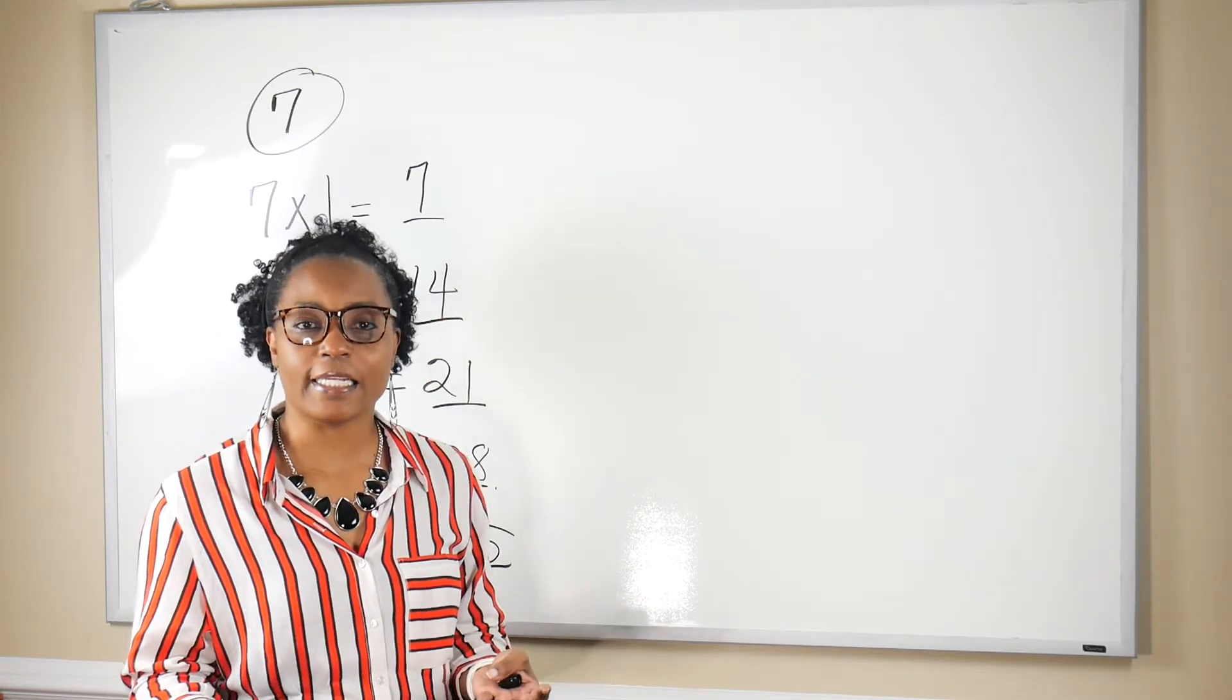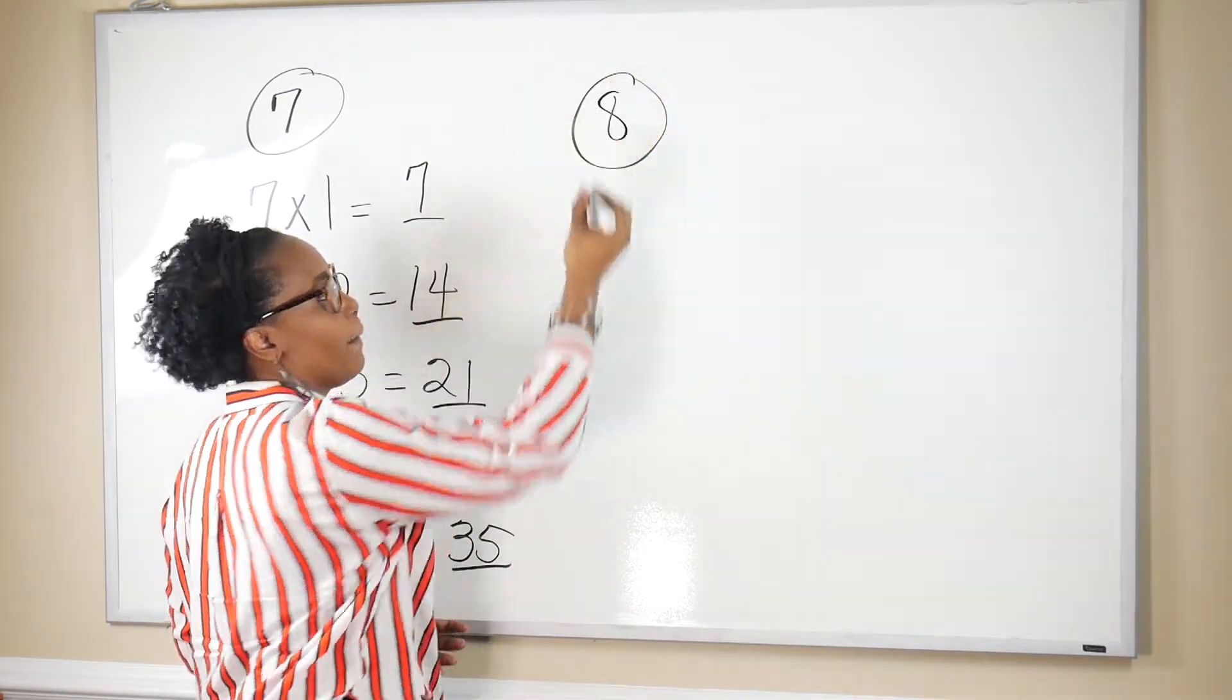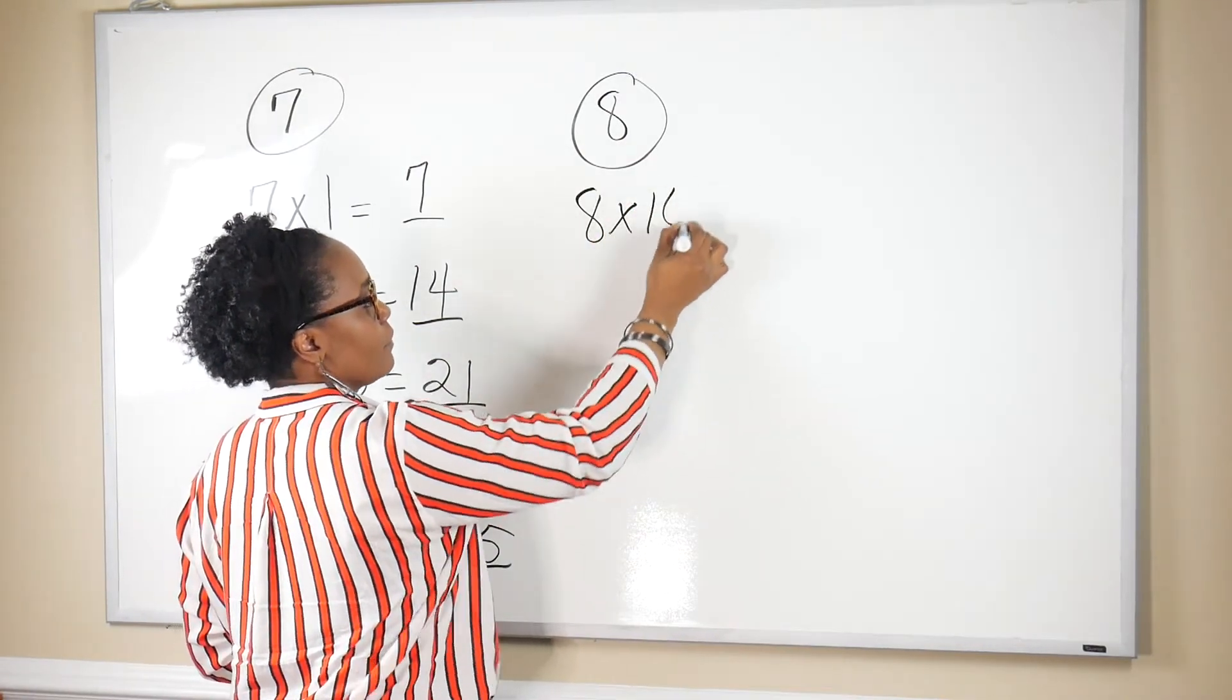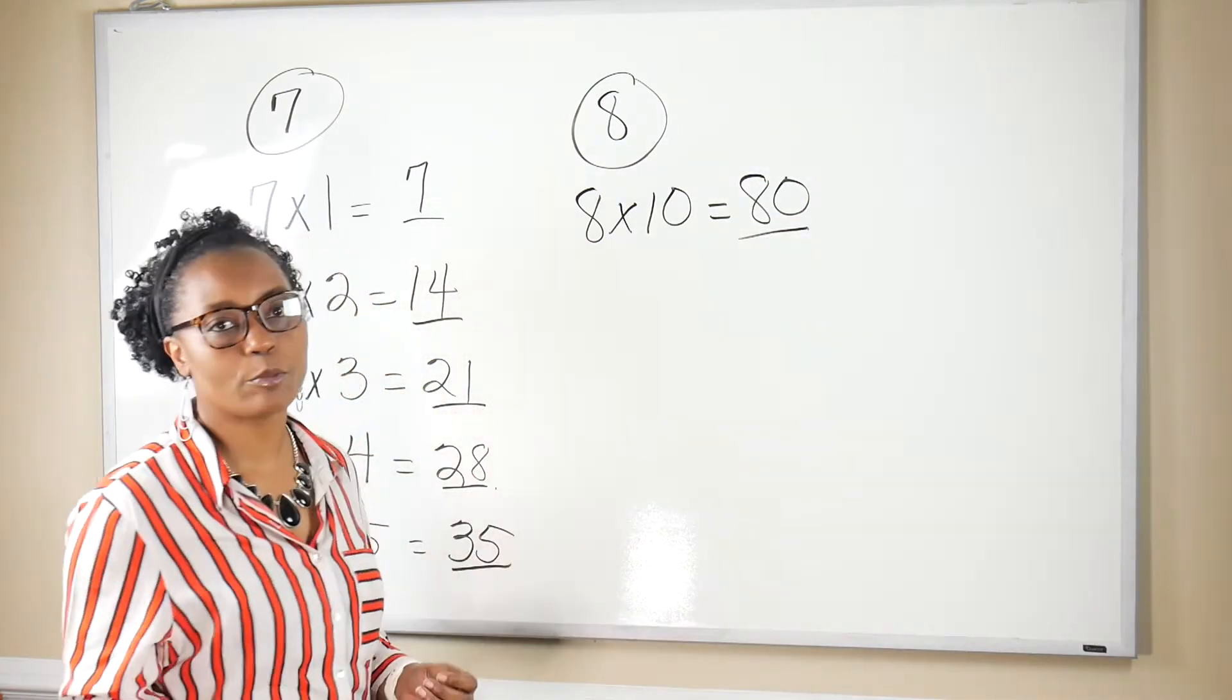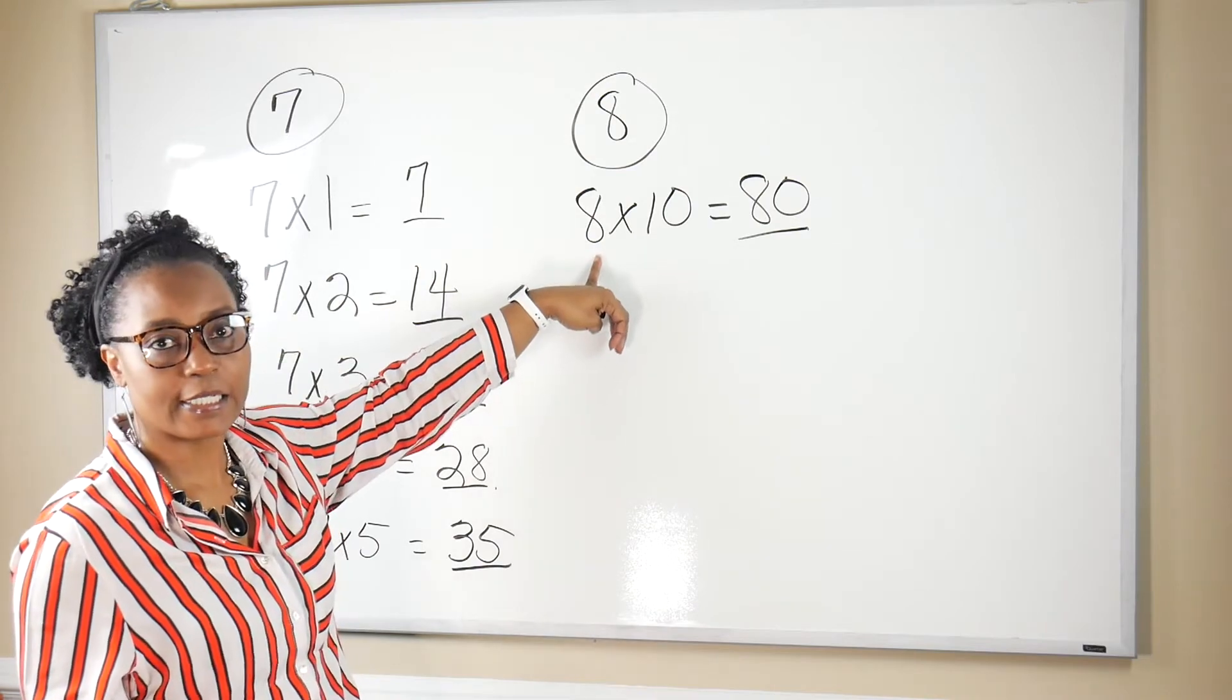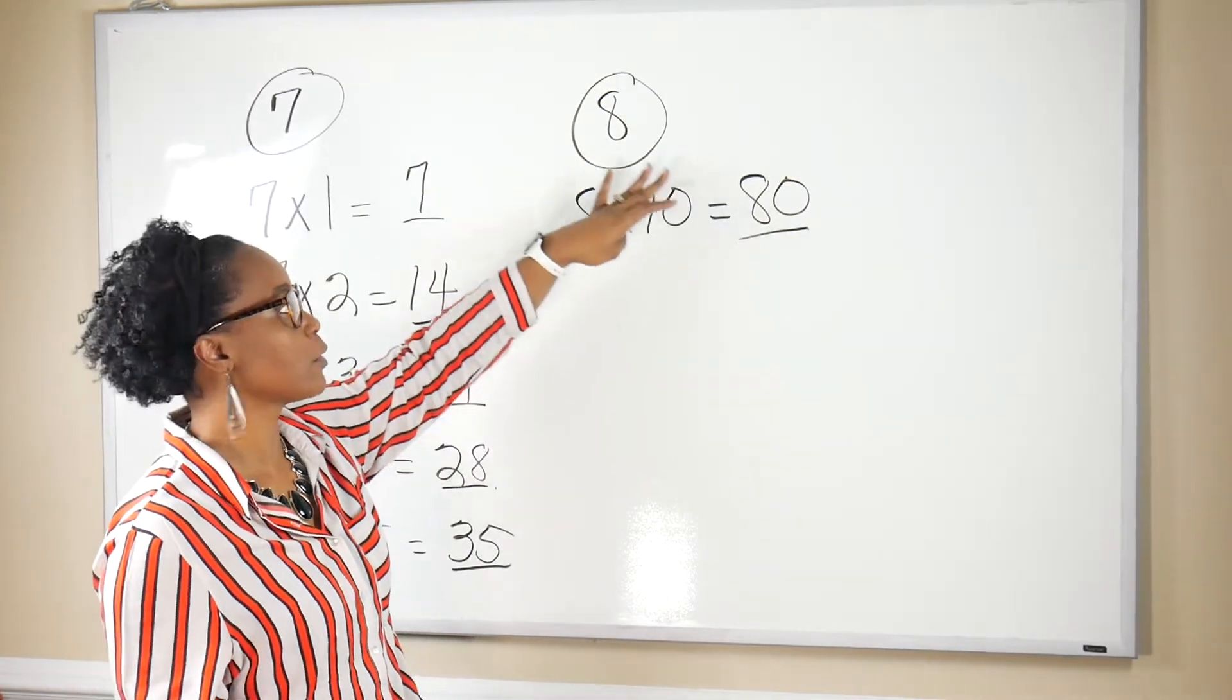Let's look at eight as an example. If I multiply eight by 10, we get 80. 80 is the multiple when you multiply this given number, which is eight, times 10. So 80 is a multiple of eight.